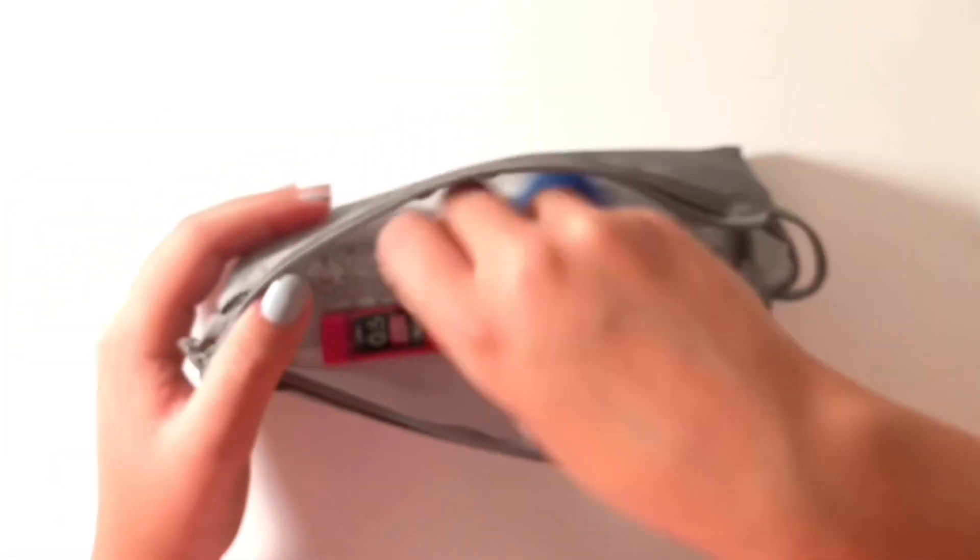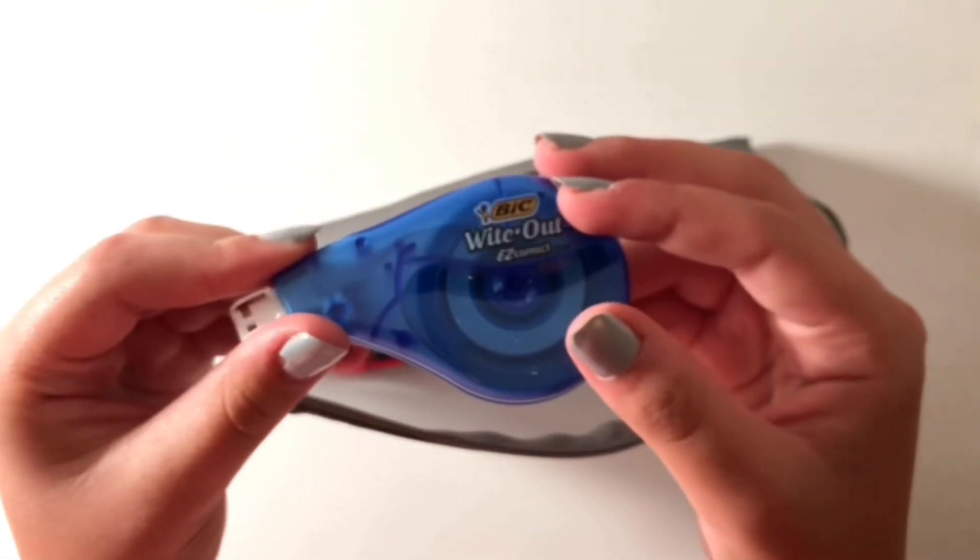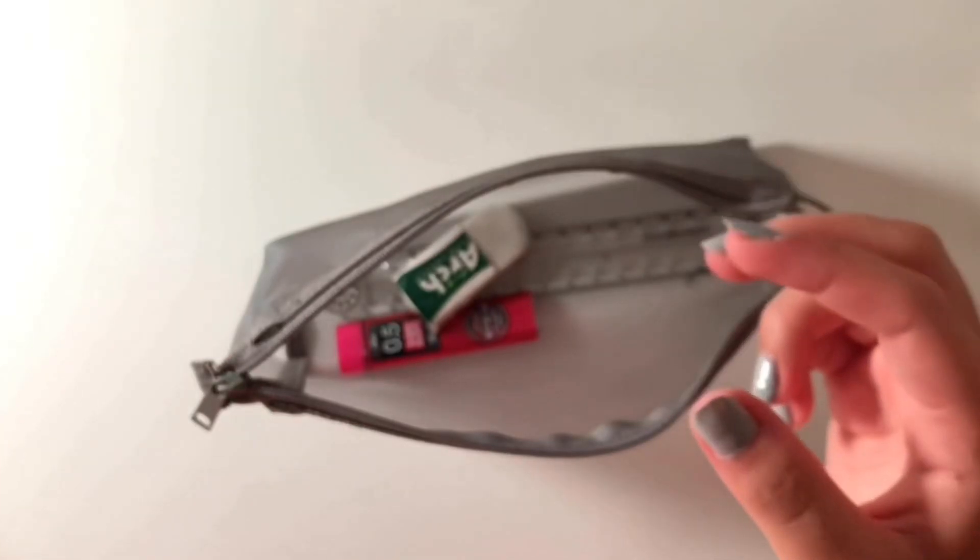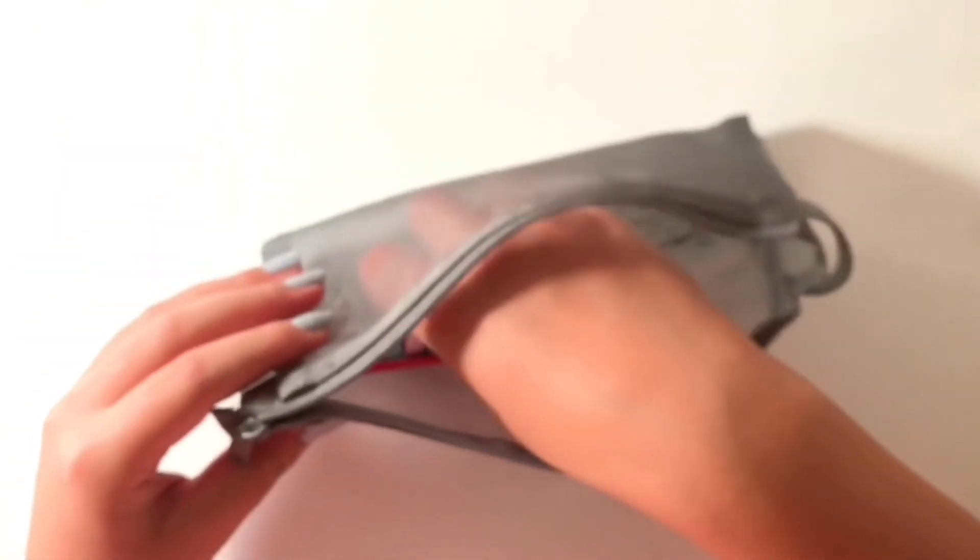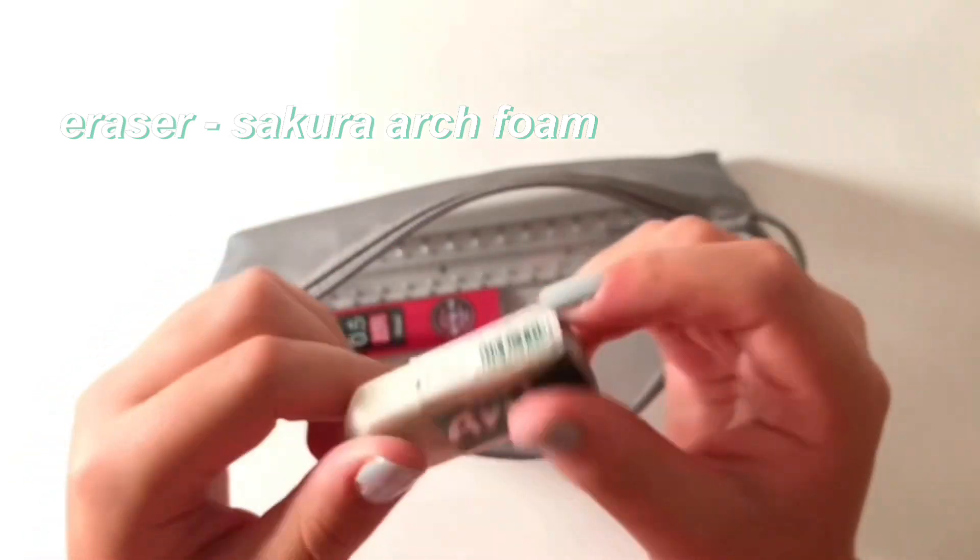And then finally here's just some random not as fun supplies. Some white out from Bic. It's really good and consistent. And this is the Sakura Arch Foam eraser. This is my favorite one.